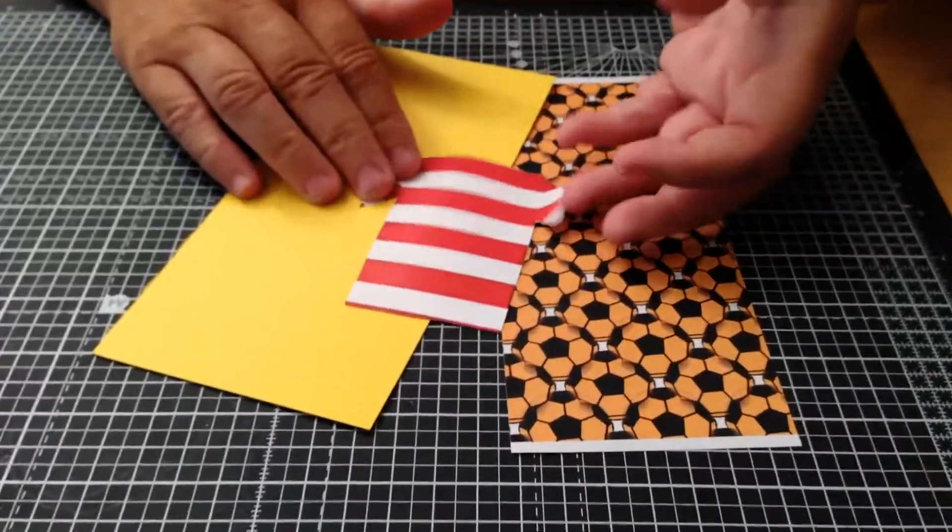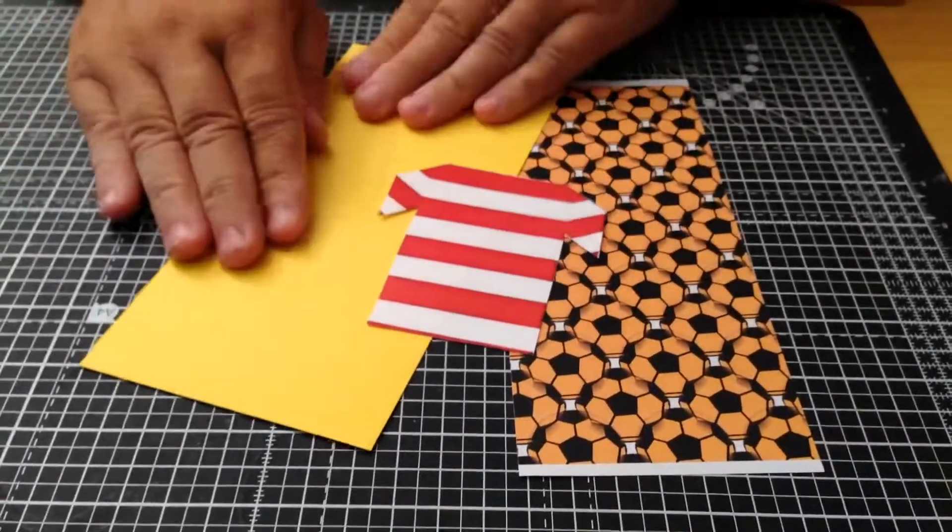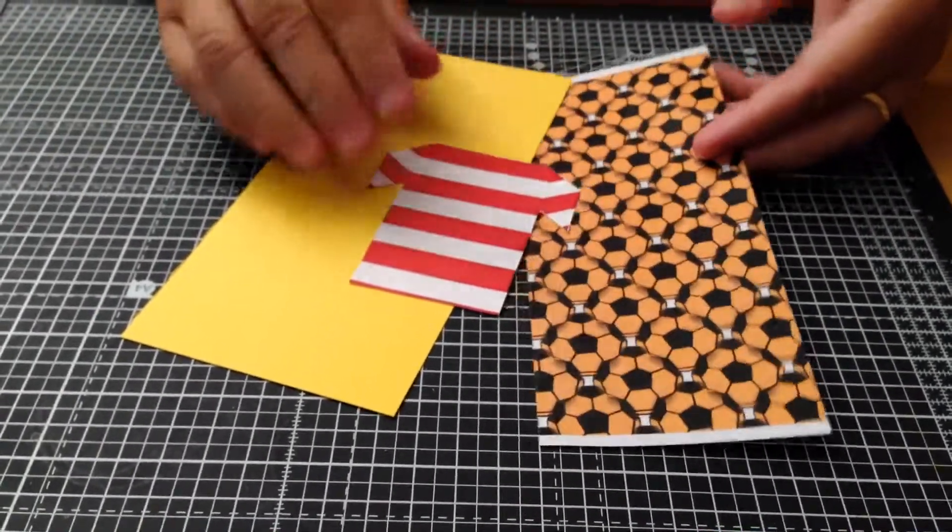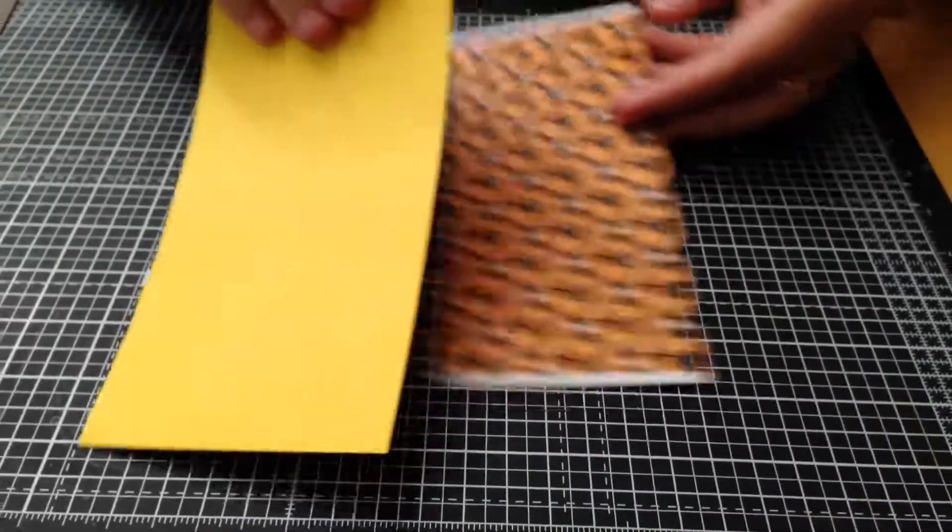Now for this project, I've cut out one of the football shirts from a piece of yellow card - you can choose what you want. I've got a yellow background too, so I've already cut that out and put that to one side.